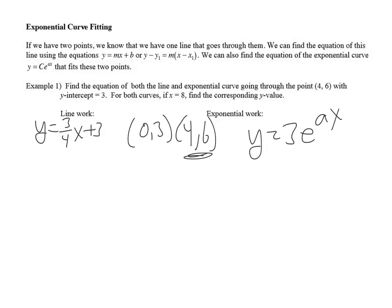So what we can do with this, at this point in the model, is we can say 6 equals 3 times e to the (a times 4), because that's what x is. So that leaves me 6 equals 3·e^(4a).